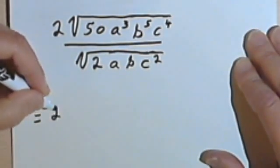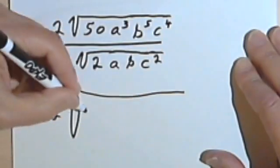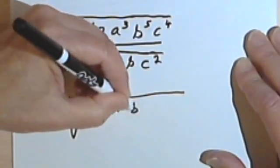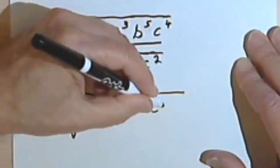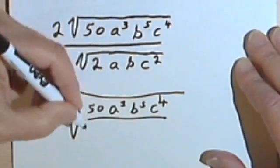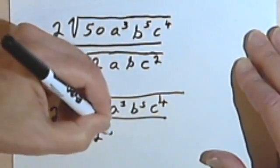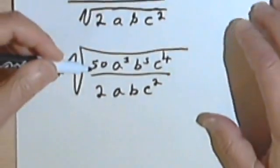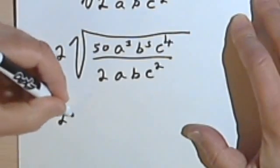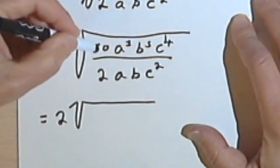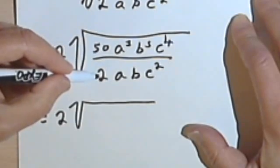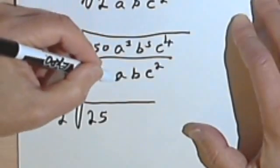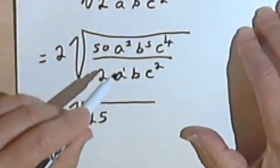Okay, so I've got 2 times 50a to the 3rd, b to the 5th, c to the 4th over 2abc squared. And now we'll reduce this fraction. So I'm going to have 2 times 50 divided by 2 is 25, a to the 3rd over a, I'm subtracting